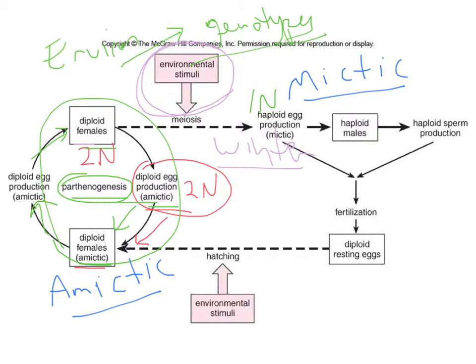Diploid females producing eggs through meiosis yield haploid eggs. Those haploid eggs can develop through parthenogenesis — the development of an unfertilized egg into an adult — but if the egg is haploid, it becomes a male. Parthenogenetically developed diploid eggs become females; parthenogenetically developed haploid eggs become males. These haploid males produce sperm — not through meiosis but through mitosis, since they're already haploid and there are no chromosomes to reduce.